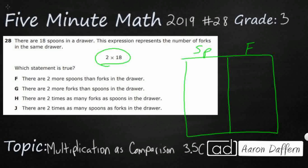So I don't feel like drawing 18 spoons, but I'm just going to use tally marks. So I'm going to pretend that these tally marks are my spoons. So I've got 15. There we go. I've got 18 spoons.